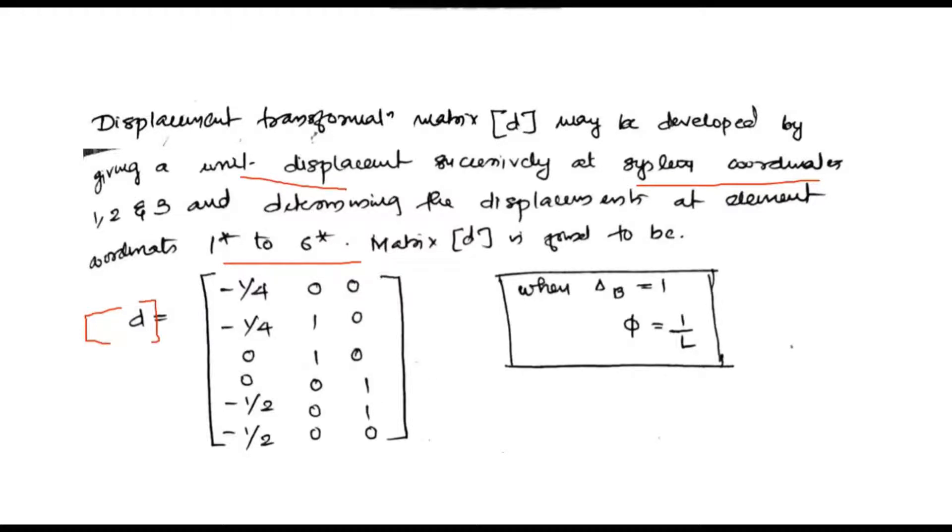equal to matrix minus 1 by 4, minus 1 by 4, 0, 0, minus 1 by 2, minus 1 by 2. We get this value since at coordinate 1 we have translation. So we use the equation phi equal to 1 by L.